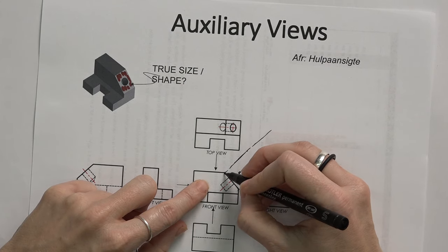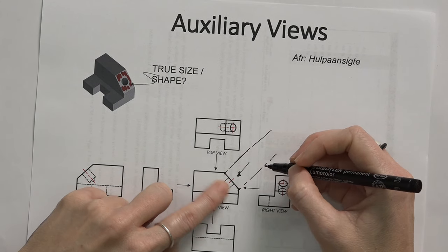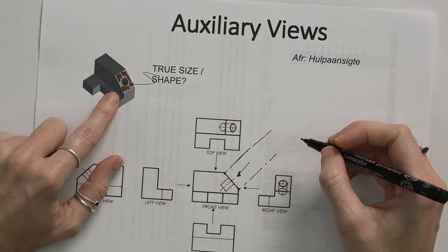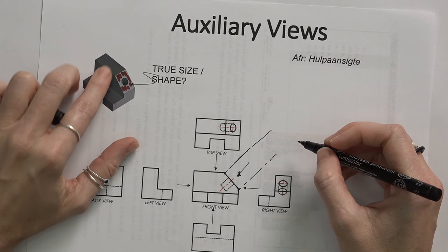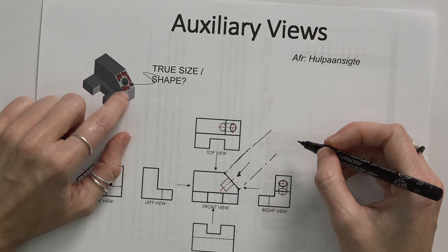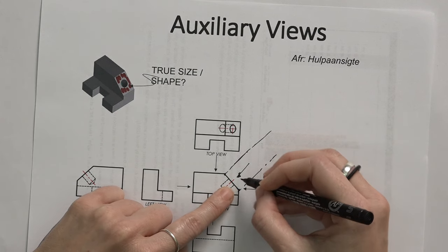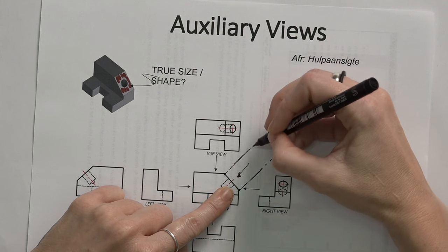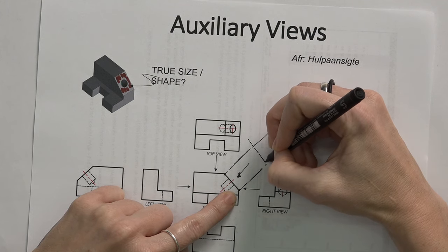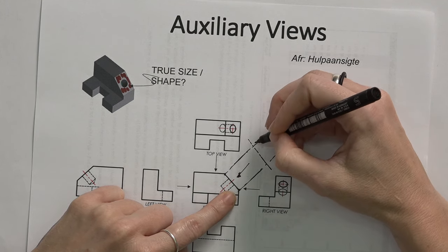I know how big the auxiliary view is, and remember, the point of the auxiliary view is to take away any distorted images. So I'm not going to draw the rest of the block. I'm literally only drawing the side that I see on this face. I know already what the size of it is, and then I can use what they call a reference line just to help me with the construction.